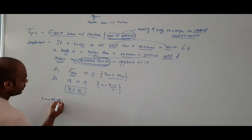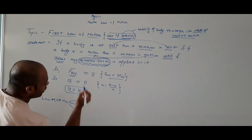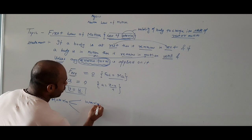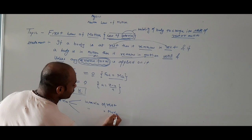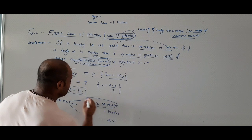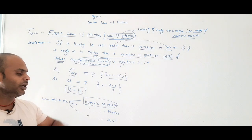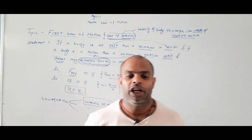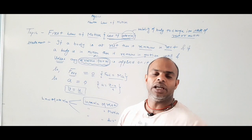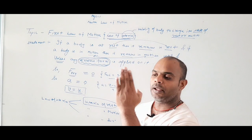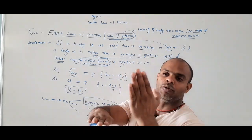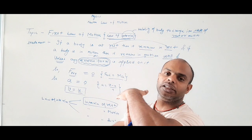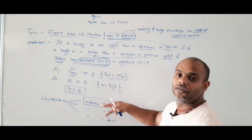Inertia teen prakar ke hote hain. Pehla hota hai inertia of rest. Doosra hota hai inertia of motion. Aur teesra hota hai inertia of direction. For example of inertia of rest: you are sitting in a train, but you will fall backward when the train suddenly starts. That is an example of inertia of rest.